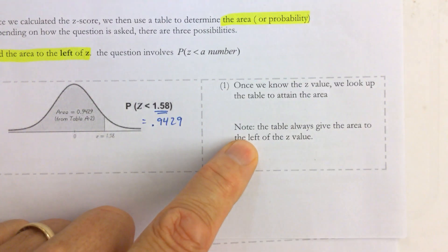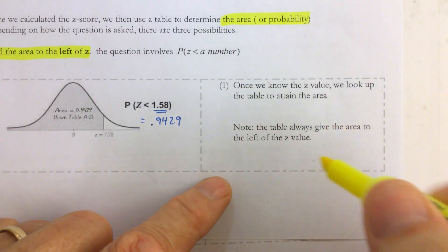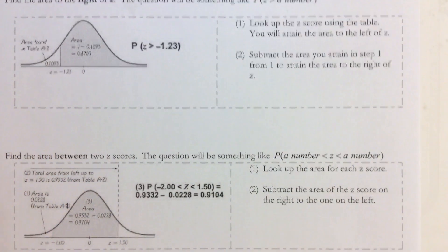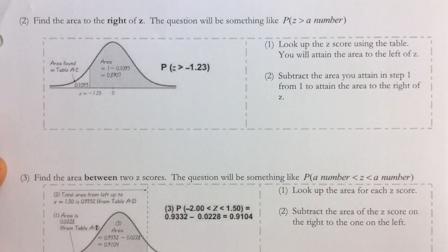Note, the table always gives the area to the left of the z-value. So that's a big deal, because just because it shows up in the z-table doesn't mean that's your answer. So here's the example that will show you why.